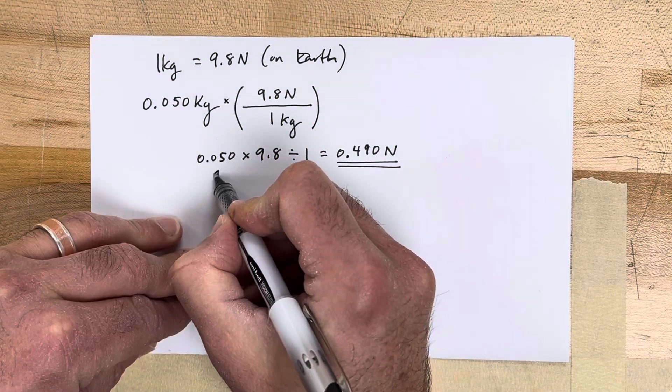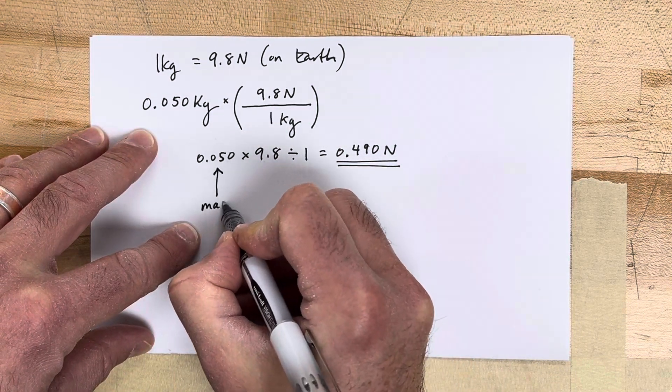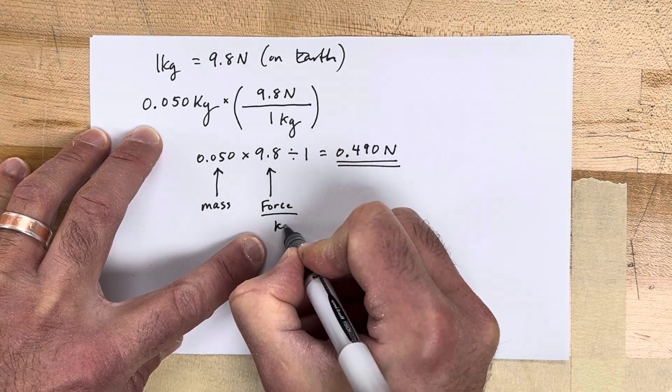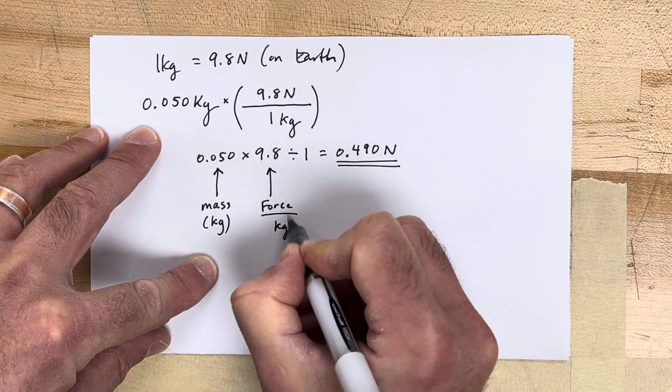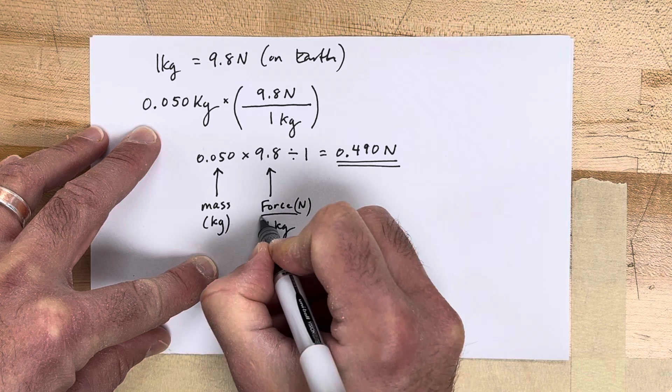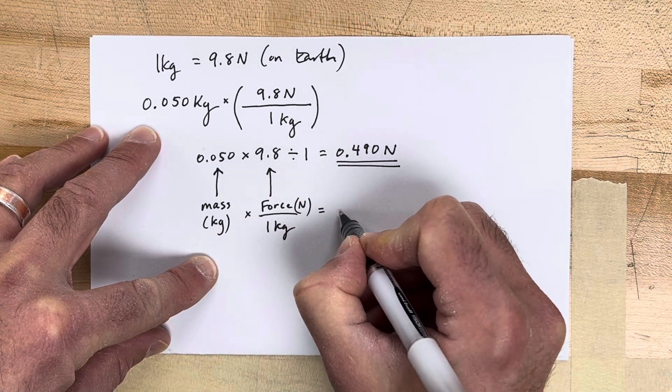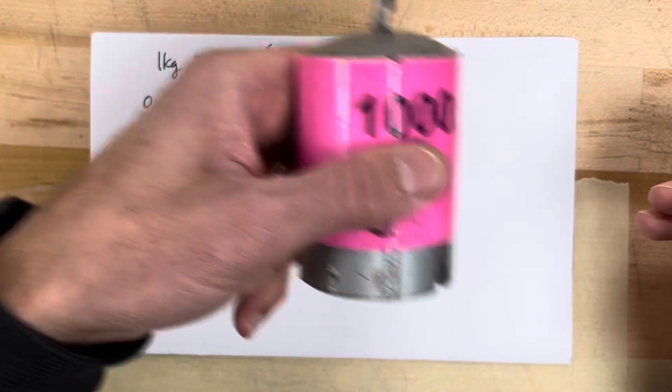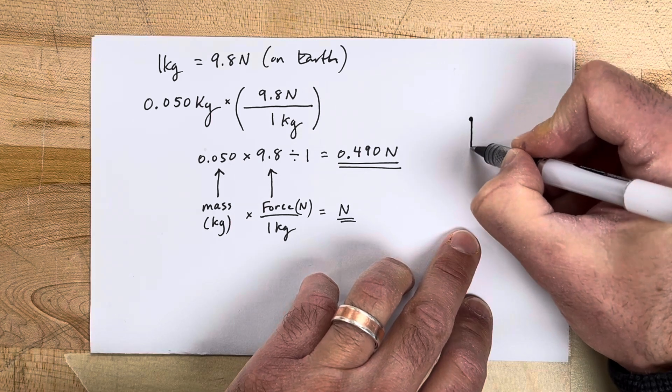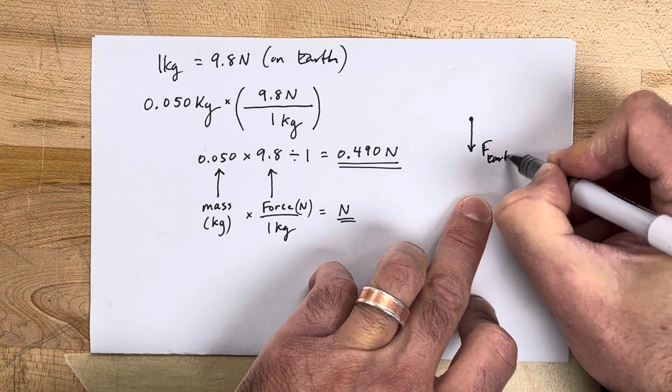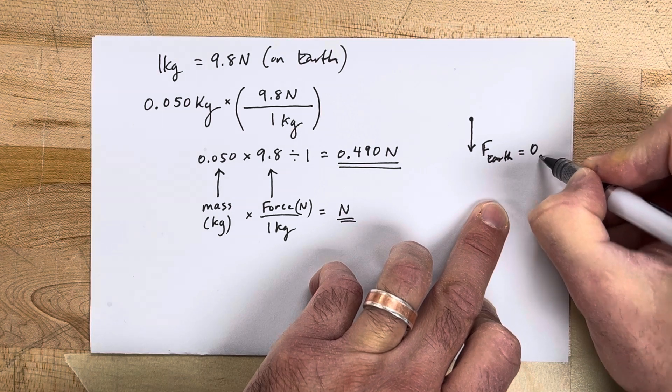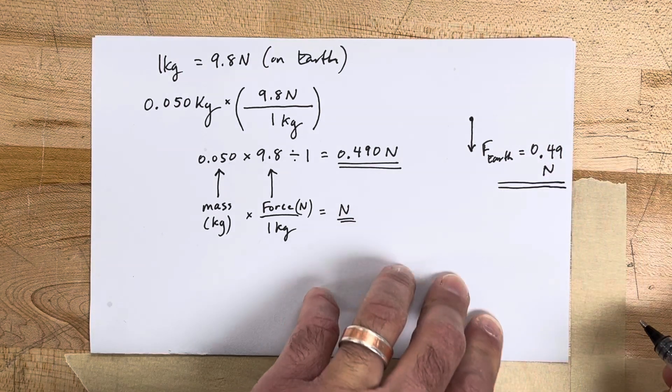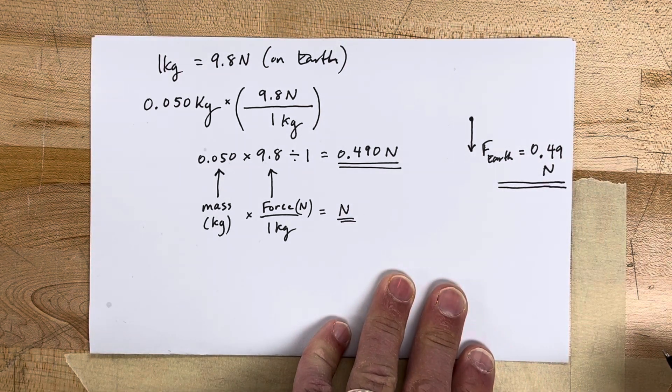So if this is your mass, this right here is the force per kilogram. This is mass measuring kilograms and this is the force in newtons for every one kilogram. When you multiply those you get newtons. This mass right here on Earth would have a downward force pulling on it, and the force of the Earth on that mass would be 0.49 newtons. That is how you calculate the force of the Earth, also known as the weight.